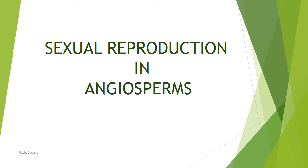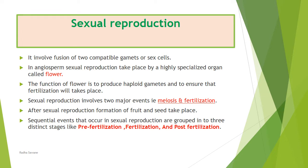Sexual reproduction in angiosperms is a very interesting topic. Angiosperms are highly advanced and well-adapted land plants. Sexual reproduction requires two compatible gametes or sex cells. In angiosperms, a special organ is produced for sexual reproduction — that organ is called a flower. The process involves meiosis and fertilization, and only after sexual reproduction does formation of fruit and seed occur. Here we study the sequential steps during which formation of fruit and seed takes place.